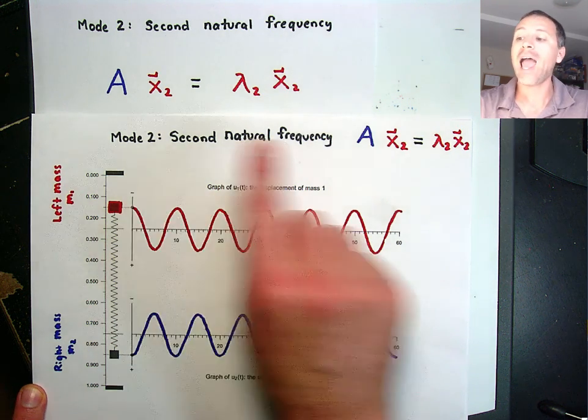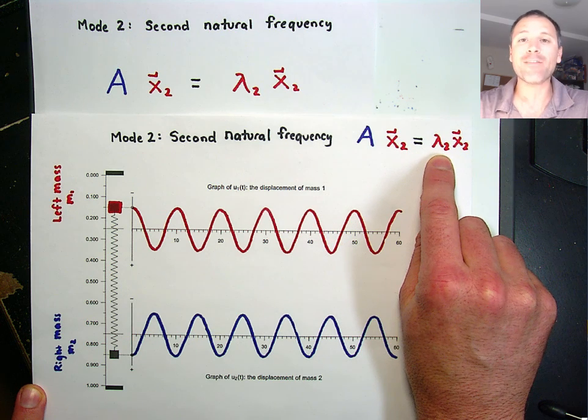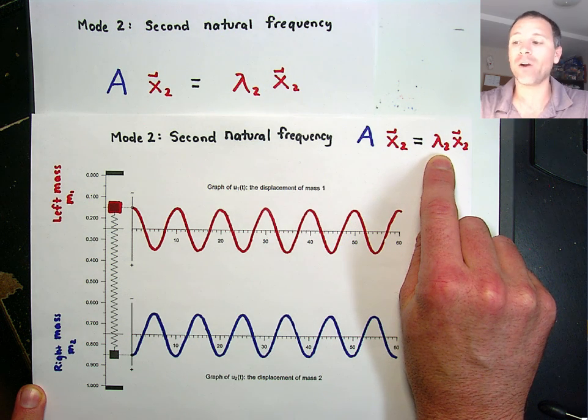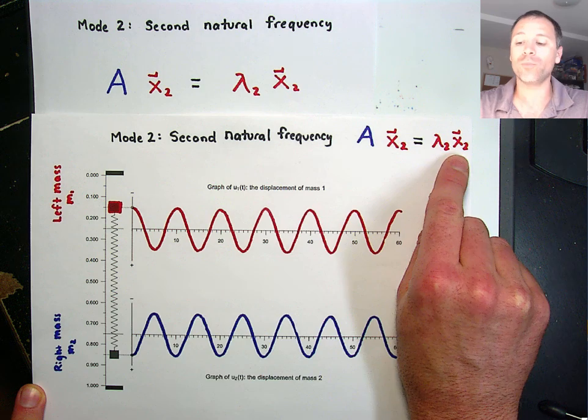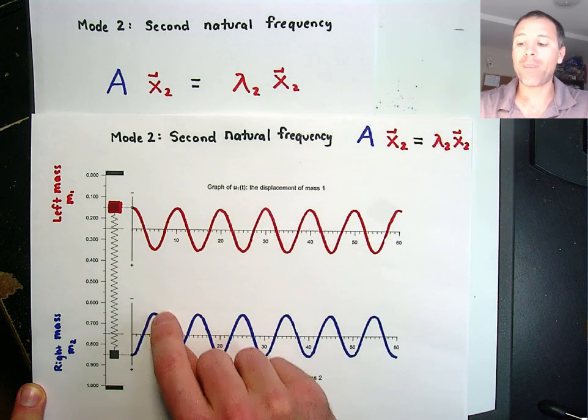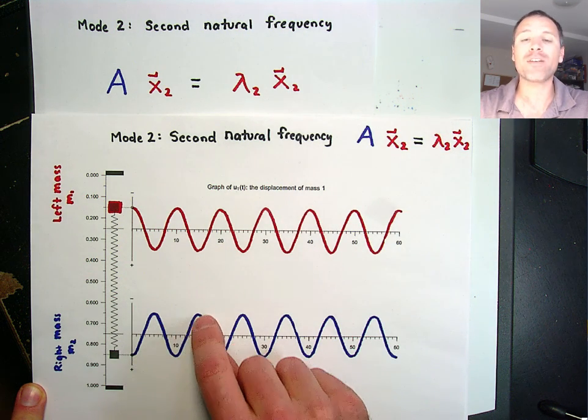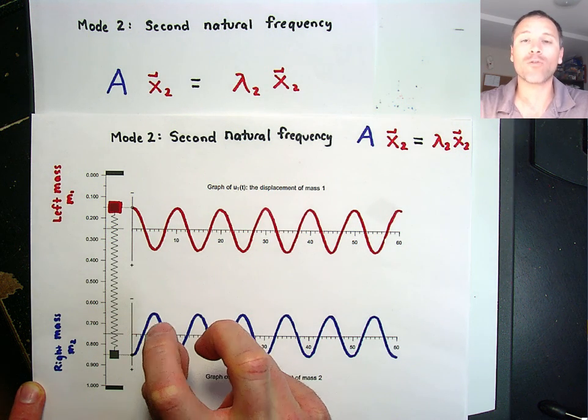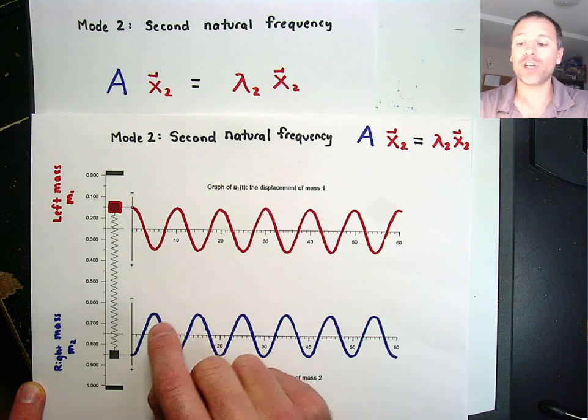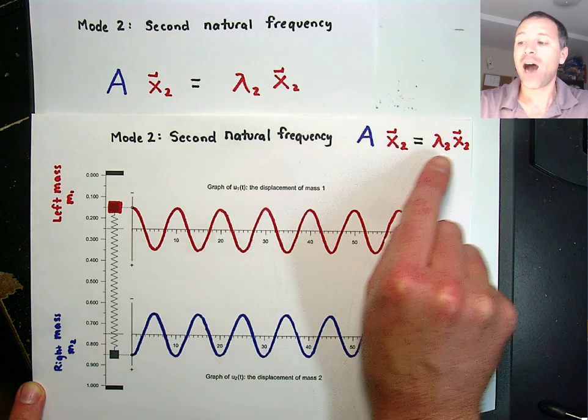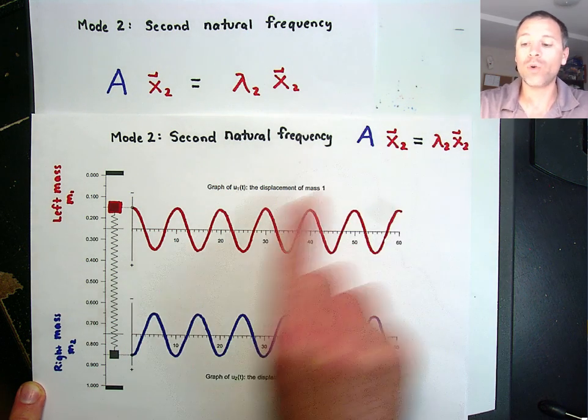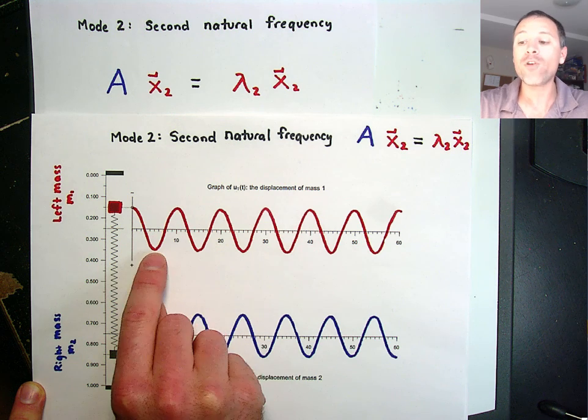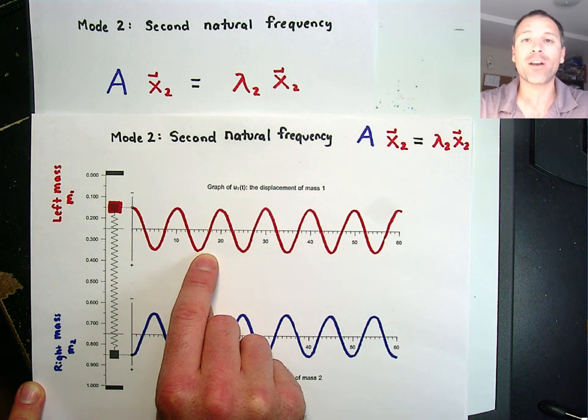So for mode 2, associated with the second eigenvector and eigenvalue pair, lambda 2 times x2, we're going to claim that the behavior of the displacement, the behavior of this function matches a pure cosine curve or a pure periodic function, and the eigenvalue lambda 2 is going to be related to the frequency of these periodic functions.